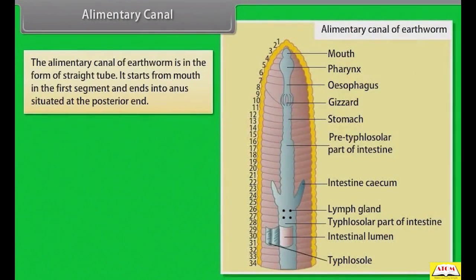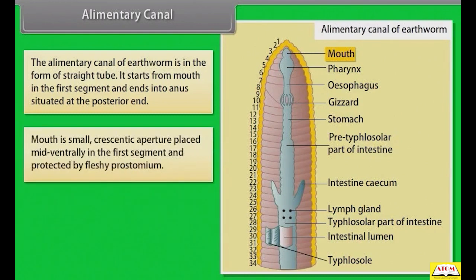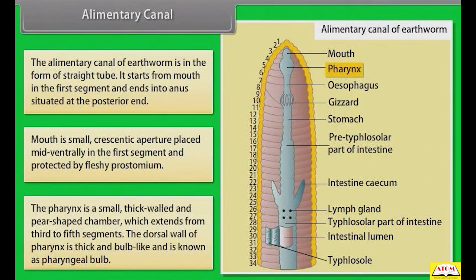The alimentary canal of earthworm is in the form of a straight tube. It starts from the mouth in the first segment and ends into the anus situated at the posterior end. The mouth is a small, crescentic aperture placed mid-ventrally in the first segment and protected by the fleshy prostomium. The pharynx is a small, thick-walled, pear-shaped chamber extending from the 3rd to 5th segment. The dorsal wall of the pharynx is thick and bulb-like, known as the pharyngeal bulb.